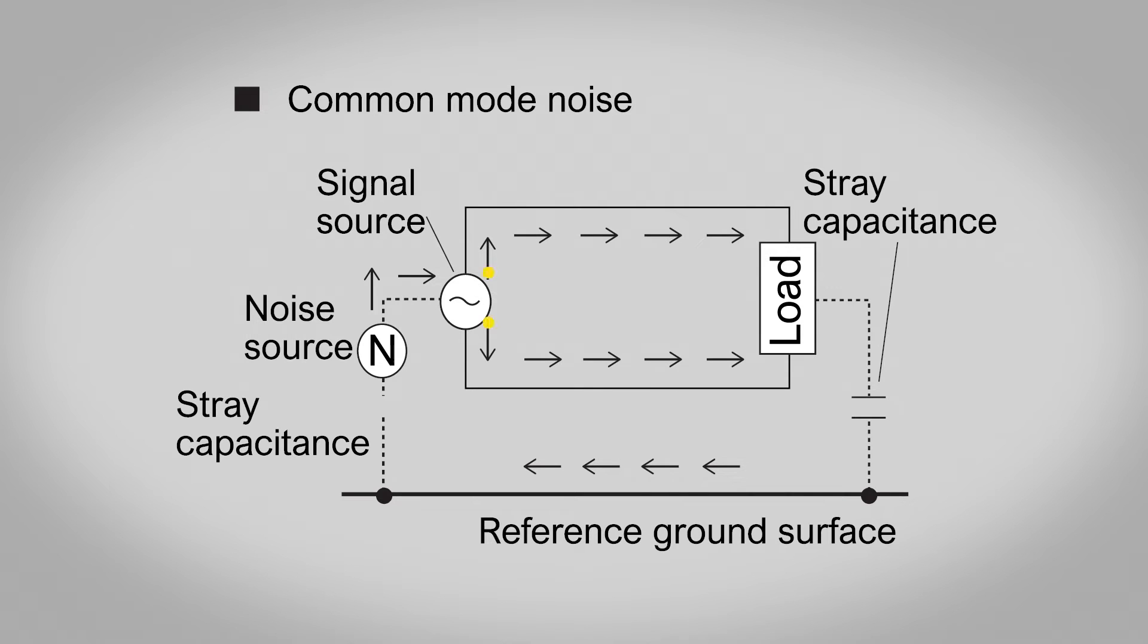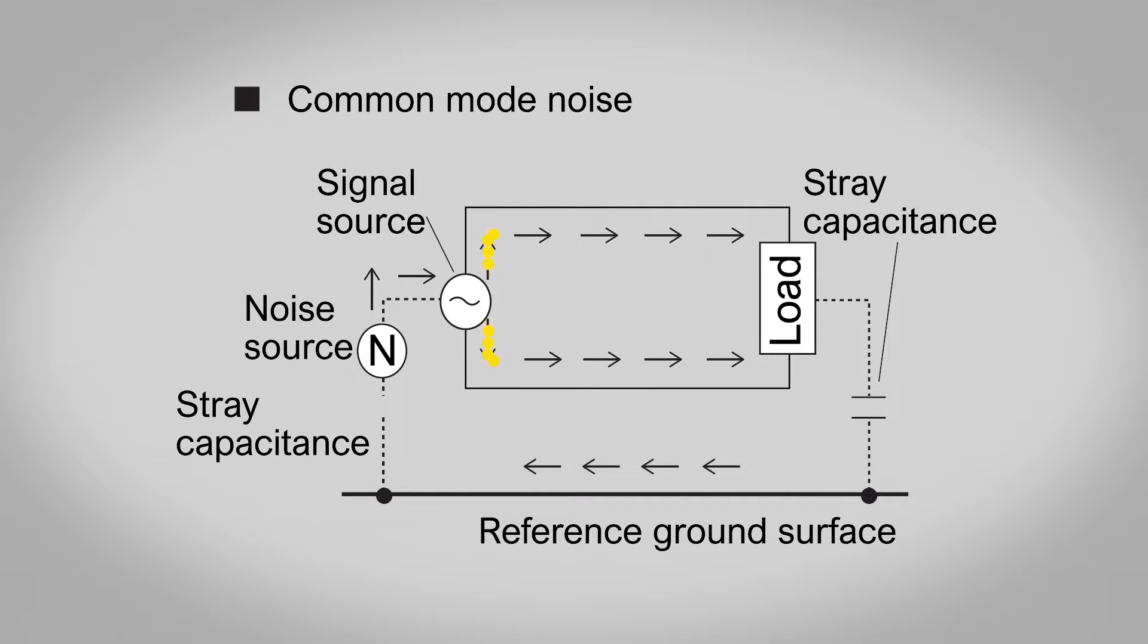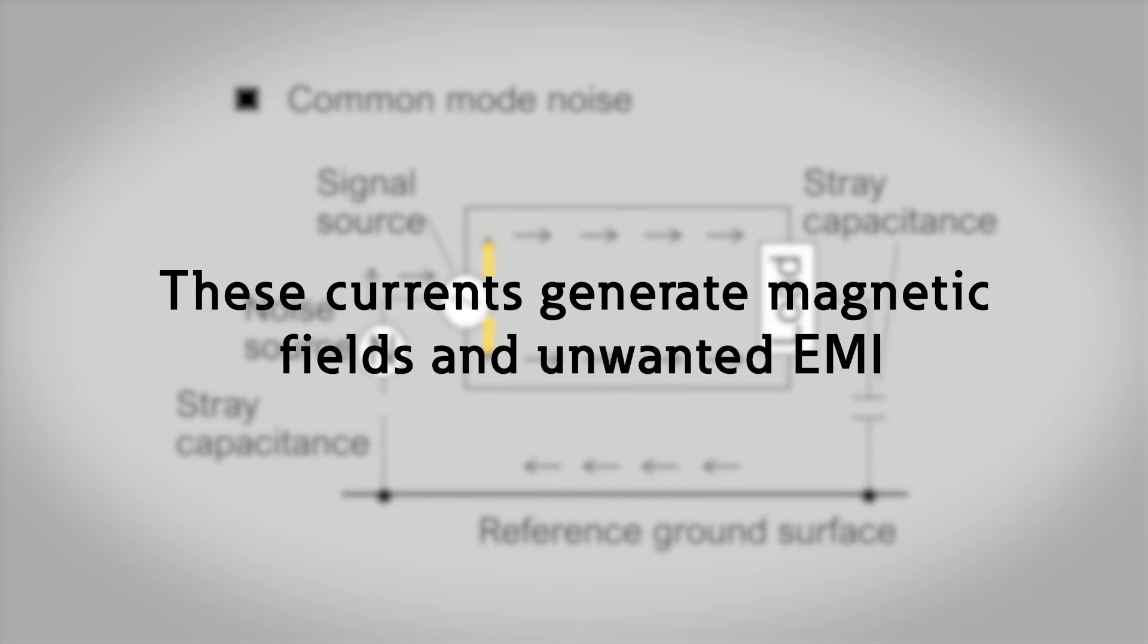In common mode noise, the signals on the two lines are in phase with each other. This is often seen in signals with a ground connection where a noise current is developed in the ground path due to parasitic capacitance between the cable and ground. Common mode current can create high-level voltage spikes that damage electronics or create EMI.